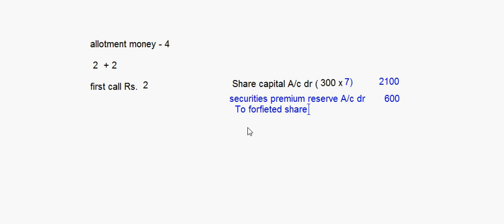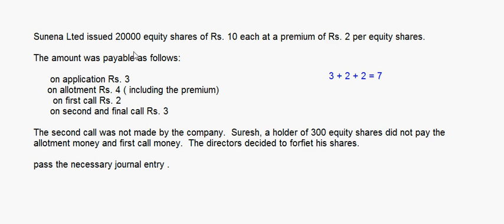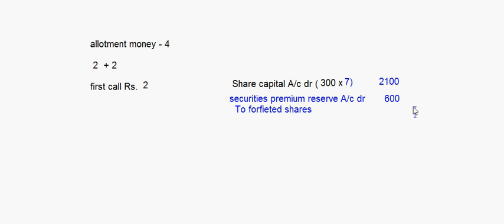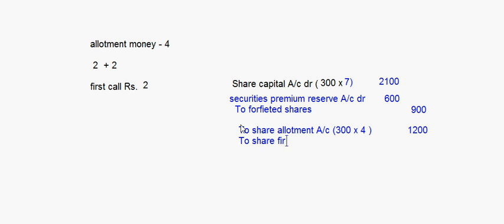Forfeited Shares - this is the amount of money actually received from him. We have received only the application money of rupees 3, so forfeited shares will be 300 into 3 = rupees 900. To Share Allotment: the amount he did not pay is 300 into 4 = rupees 1200 (the 4 includes both the share capital portion and the premium). To Share First Call: 300 into 2 = rupees 600. Total checks out: 2100 plus 600 equals 2700 on the debit side. This is the journal entry for forfeiture of these 300 shares.